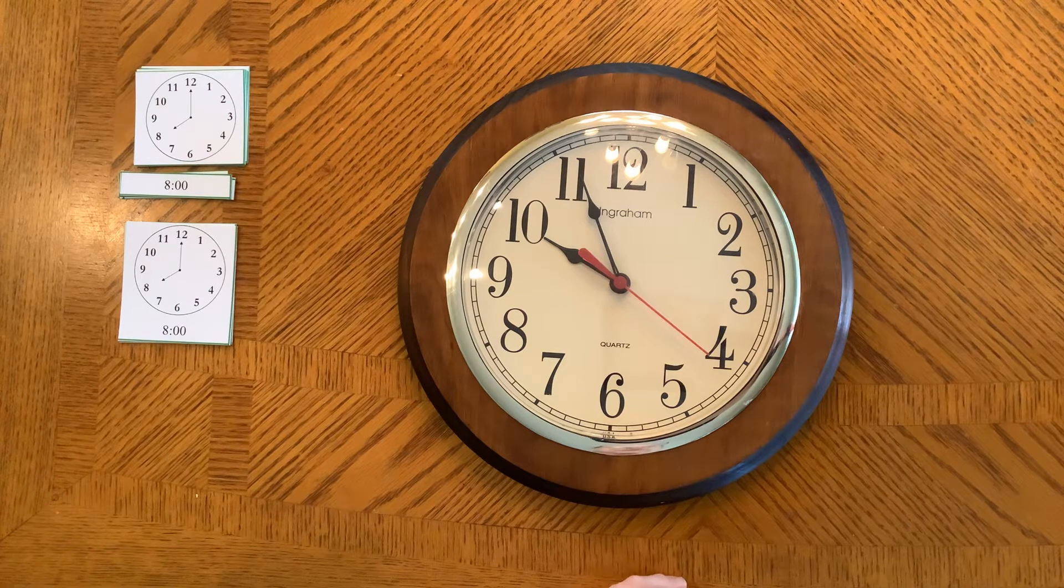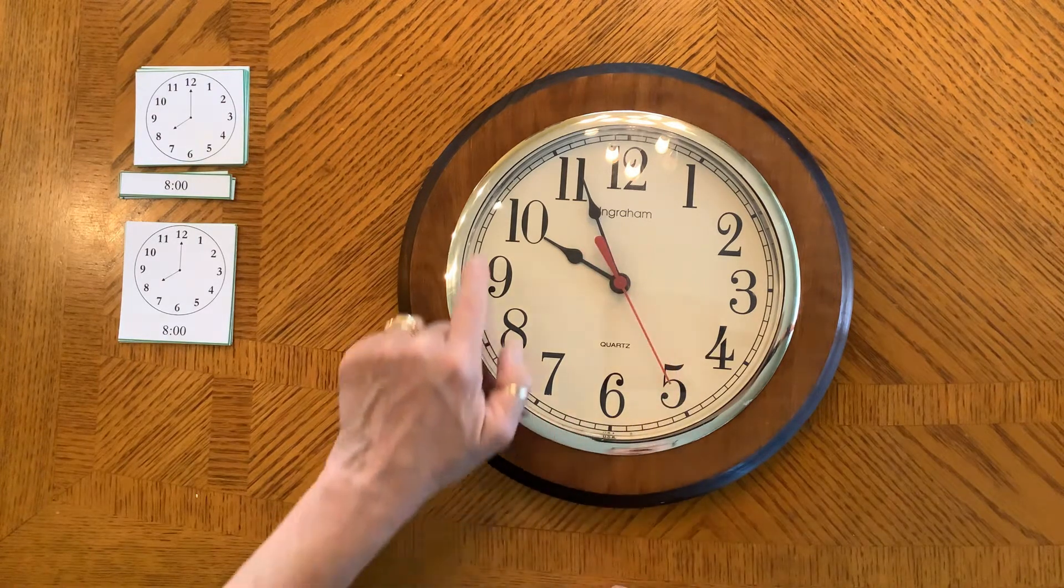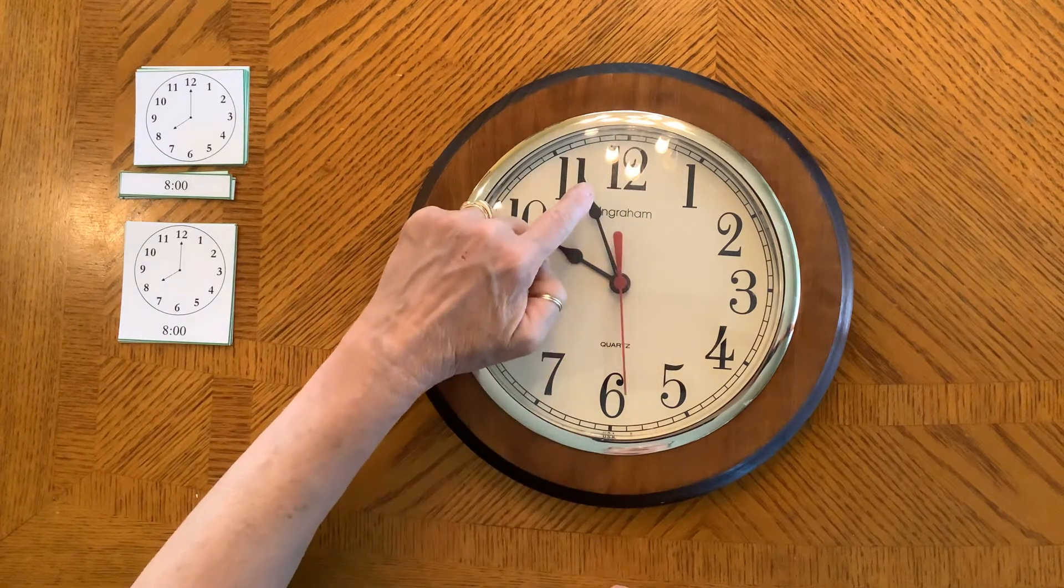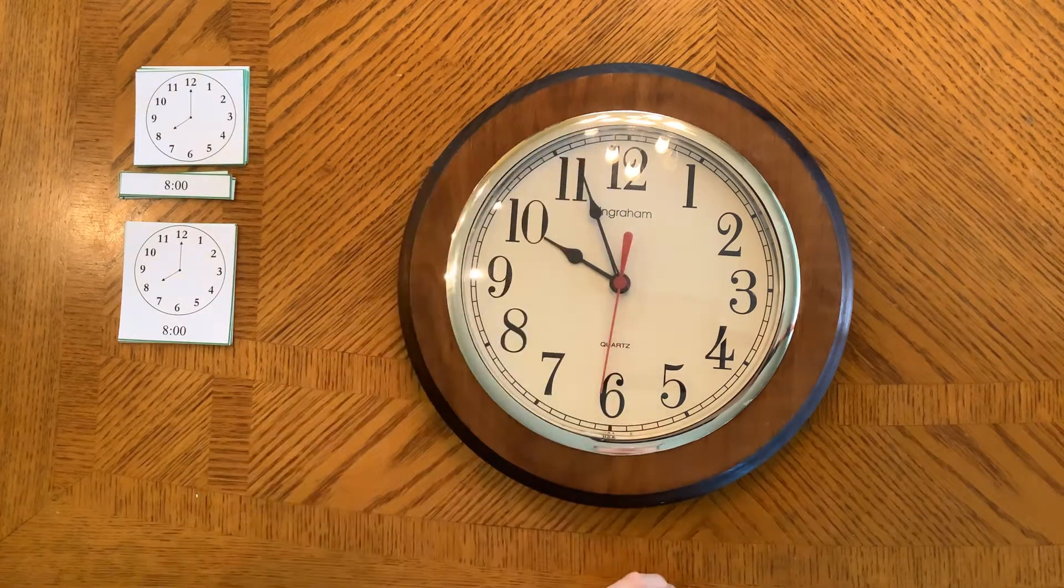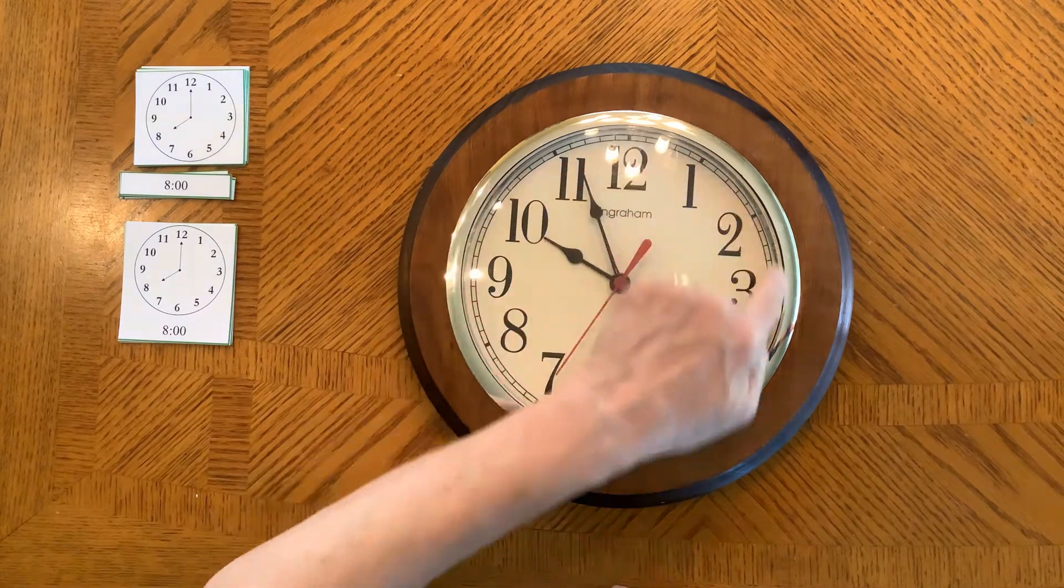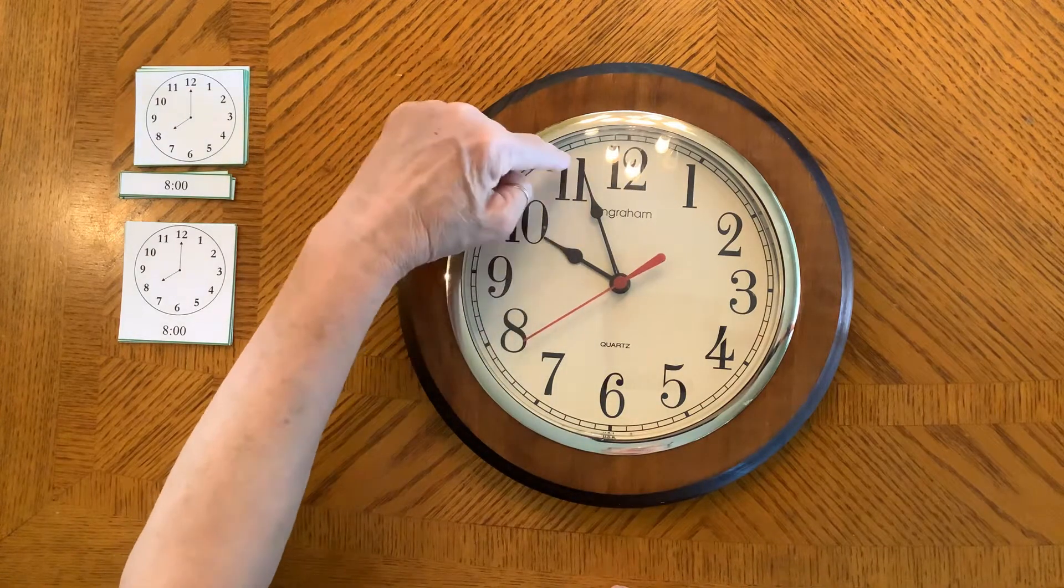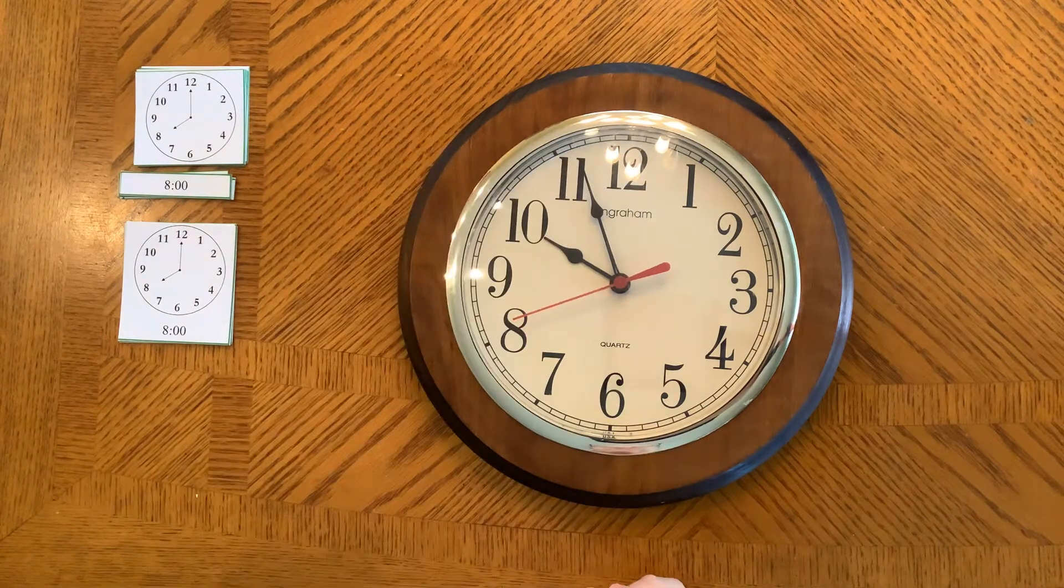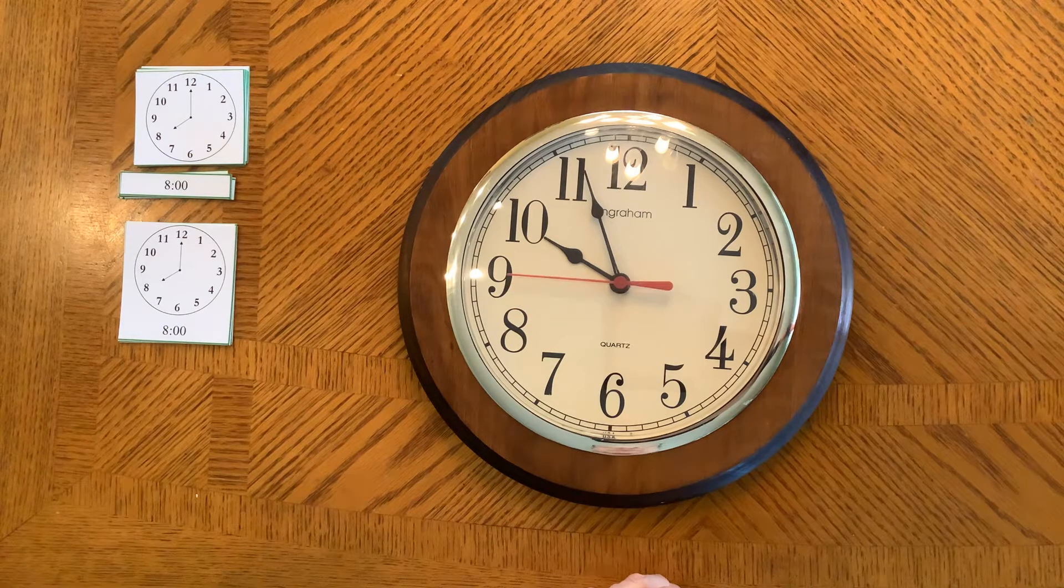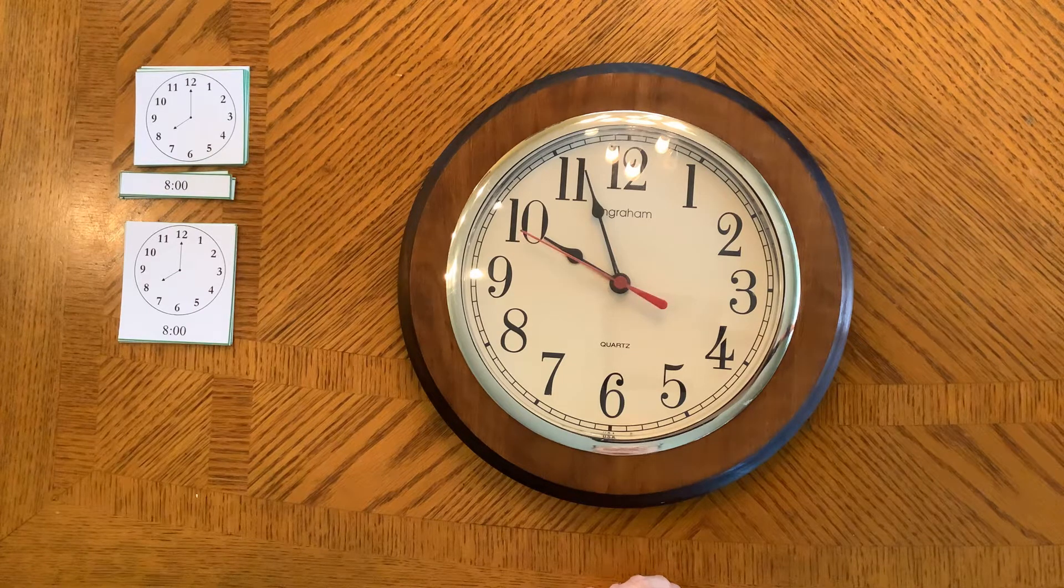And this is kind of how it works. This second hand has to travel all the way around to the top to make the minute hand travel only one space. And this minute hand has to travel all the way around the clock to get the hour hand to move up one number. And we are going to be doing time on the hour.